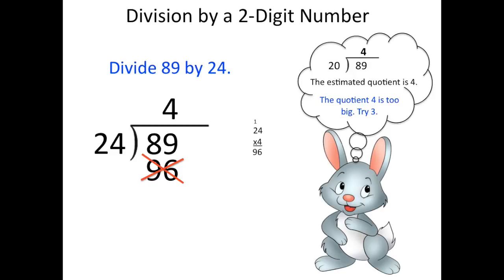Since it was just a little bit too big, we're just going to try one number underneath. We'll try 3. So again, he's going to do some math off to the side. 24 times 3 is 72. He'll write that in and then subtract. And he gets 17. 24 can't go into 17. So that is our remainder. So the answer for this one would be 3 remainder 17.